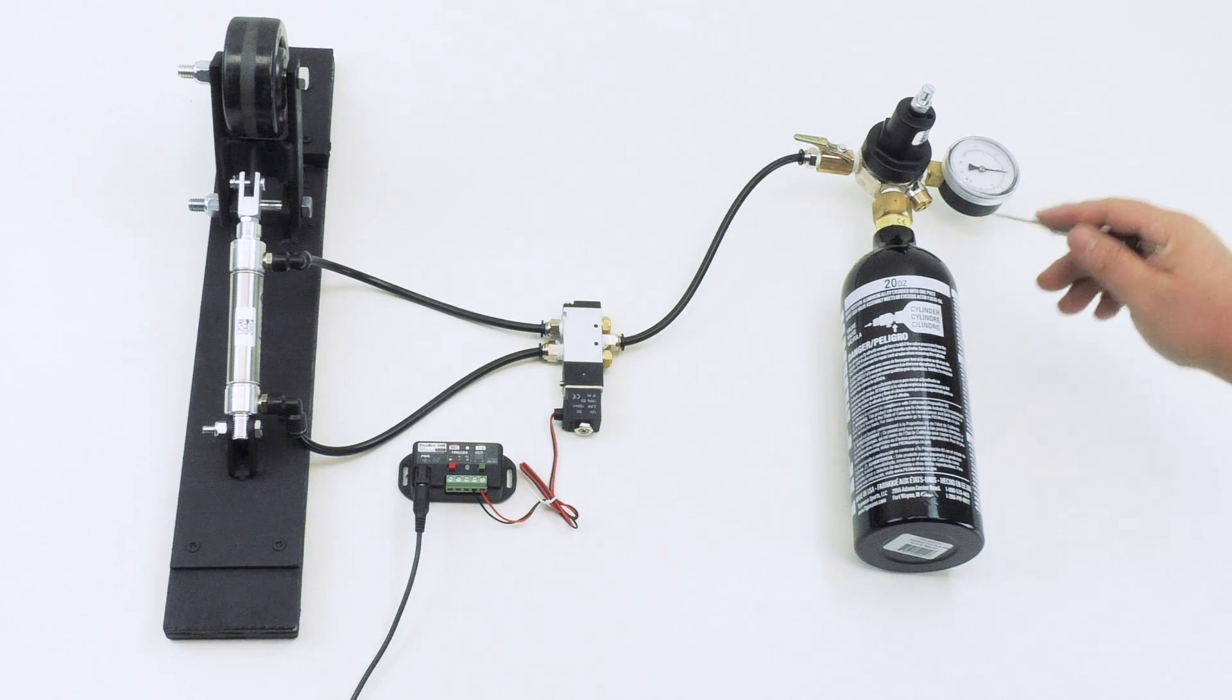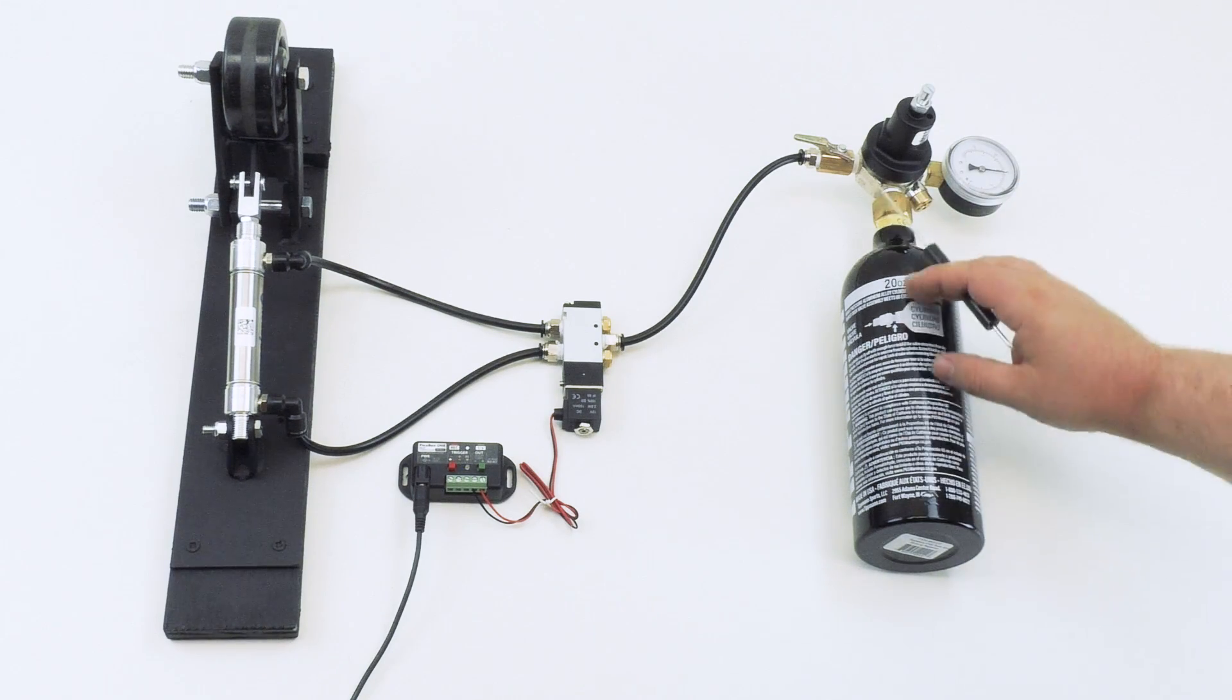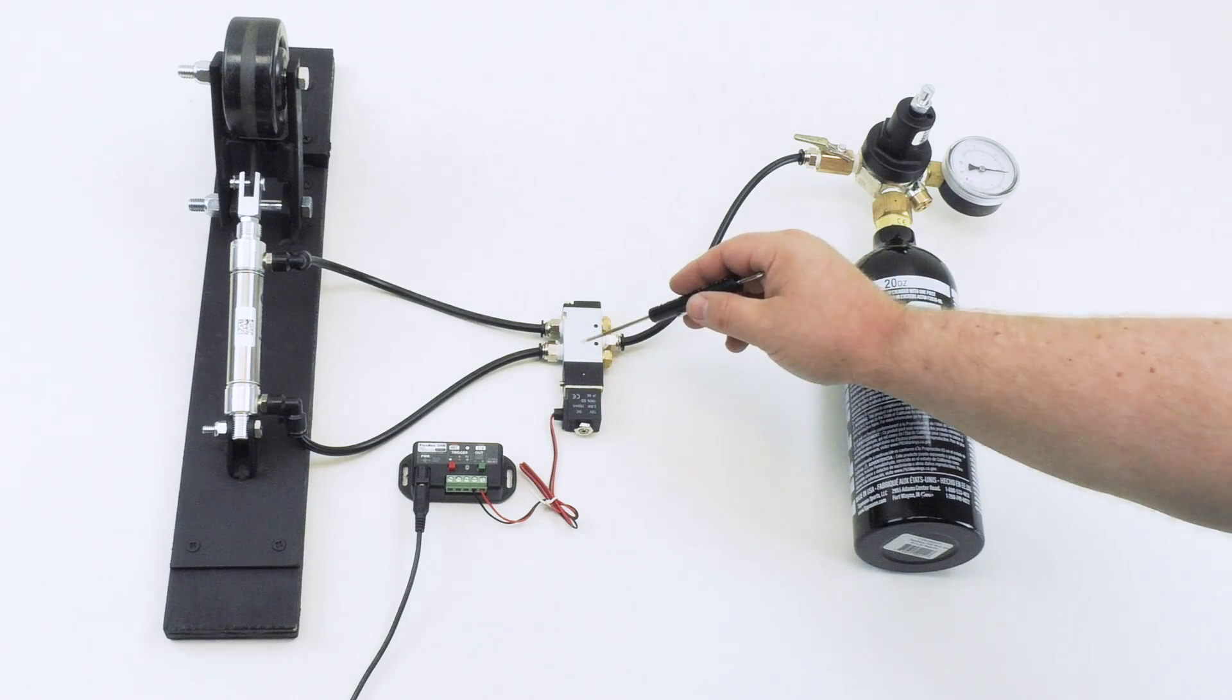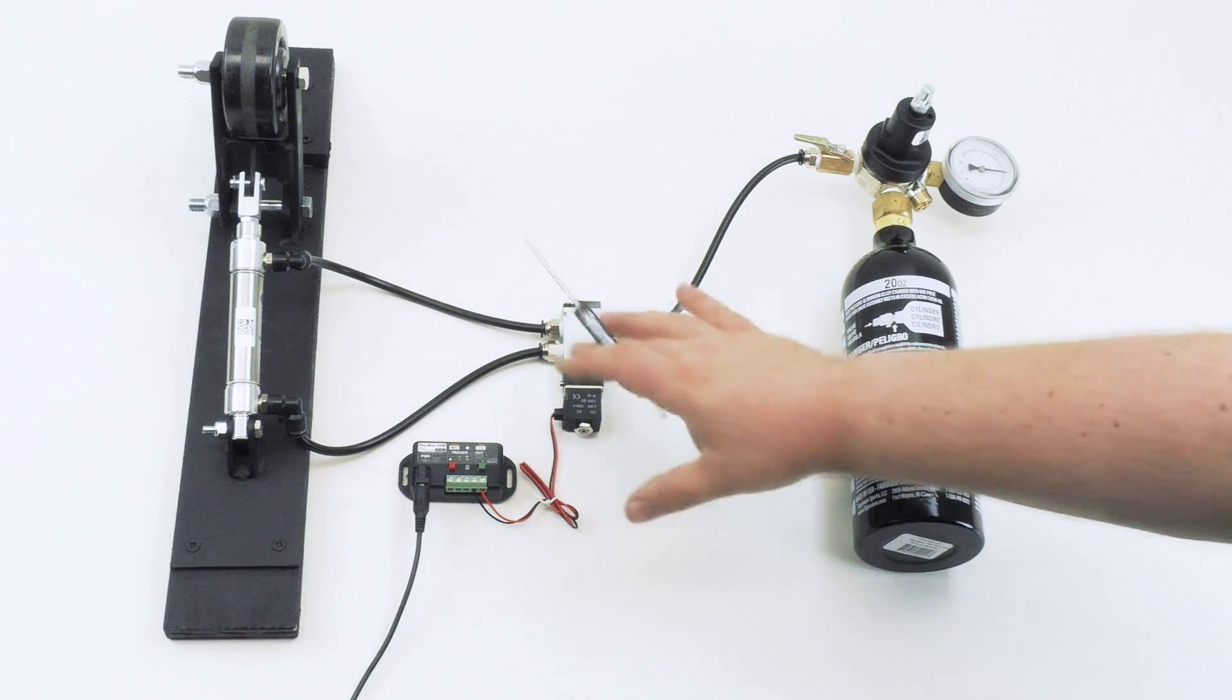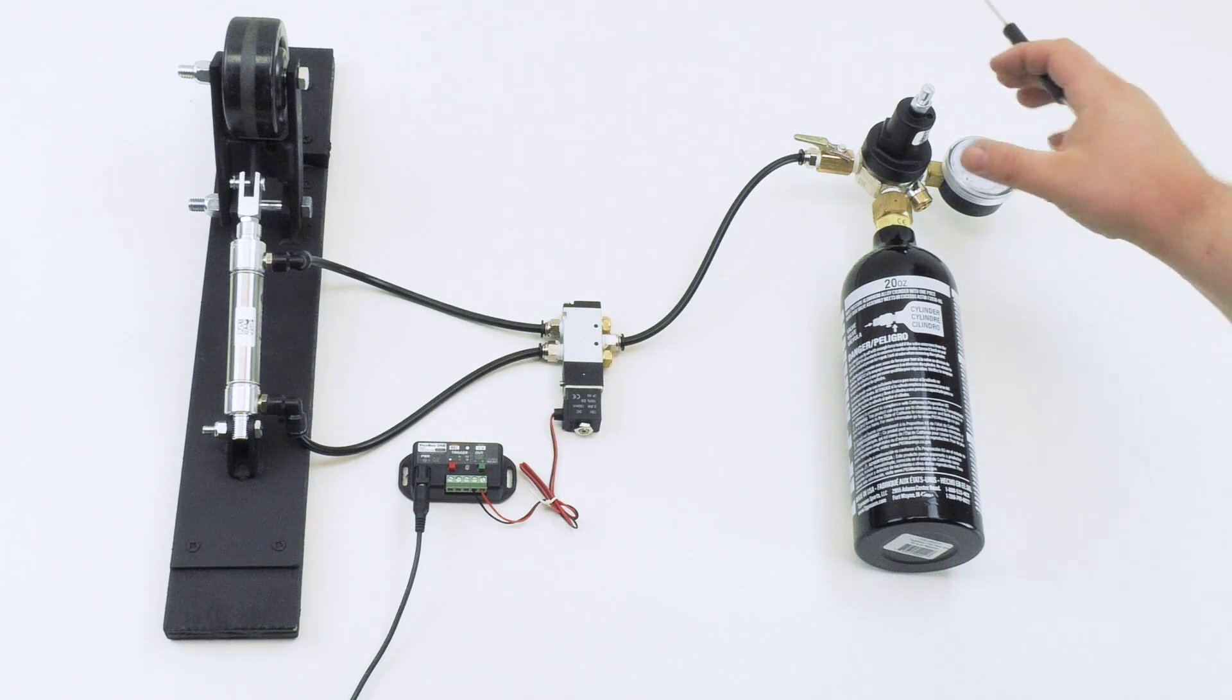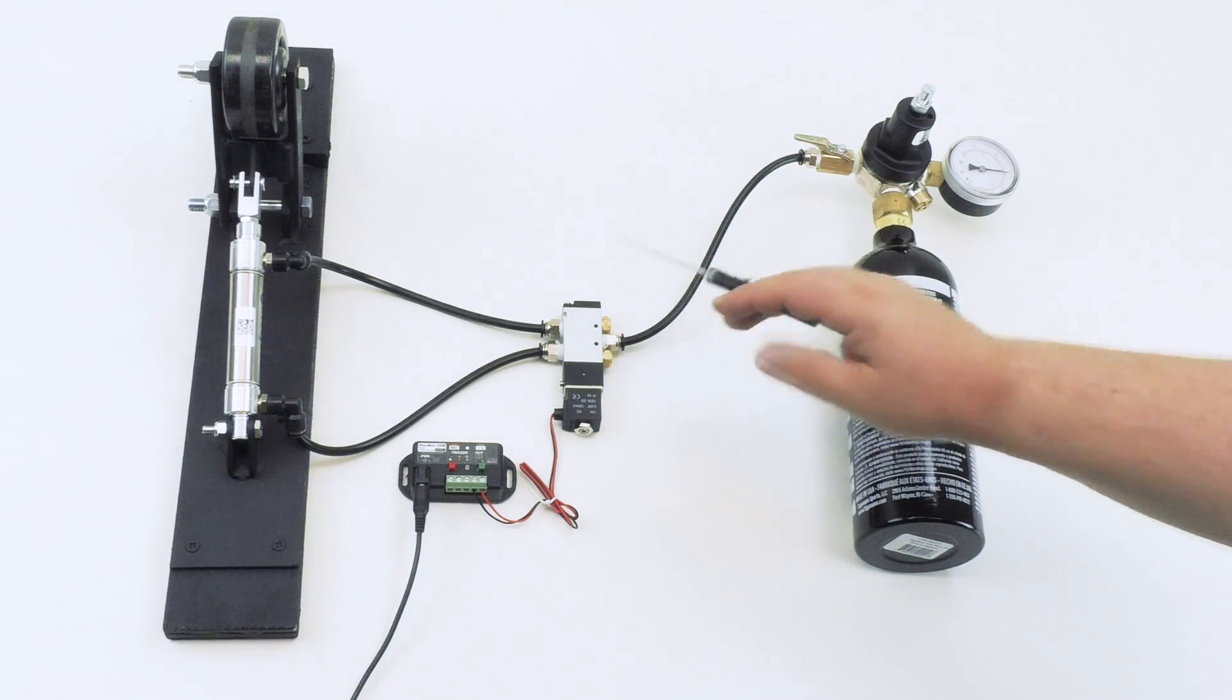So let's take a look at the regulator. This is very important again because this tank is compressed at over 800 PSI. If we were to feed that pressure directly into the valve or the cylinder, it would damage them. They're not rated to handle that high of a PSI. That's why we need a regulator so we can dial down that PSI to something that will work with our pneumatic system.